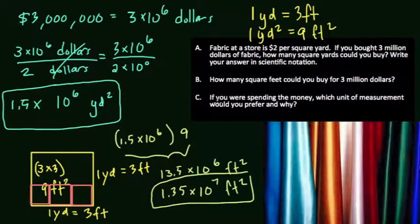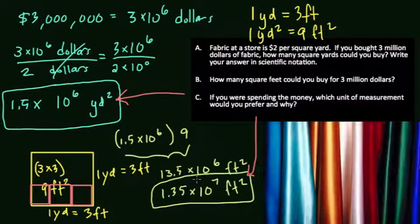Part C asks which unit of measurement you'd prefer and why. Since we're buying so much, I would use square yards—it's easier to work with as a smaller number. However, square feet might be useful if you need to know the exact square footage. Perhaps the item you're making requires exactly 1 or 2 square feet. You can justify either answer.